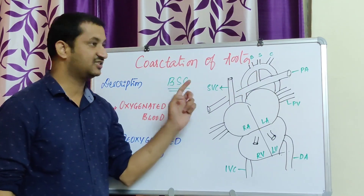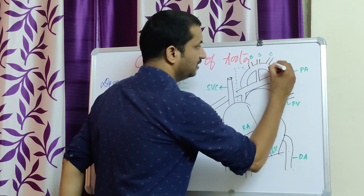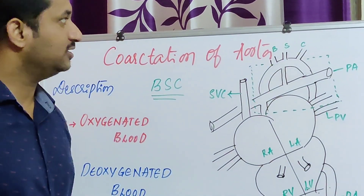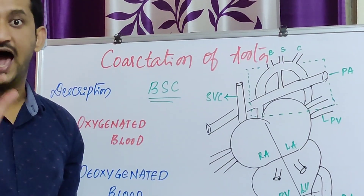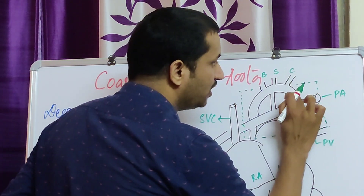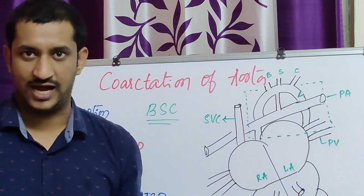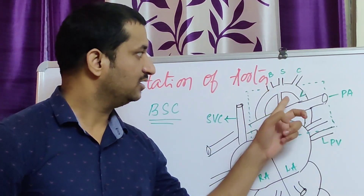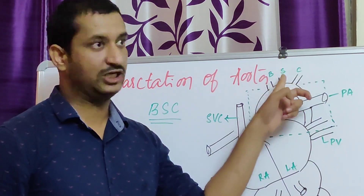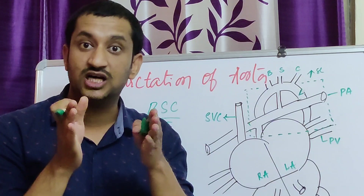B is brachiocephalic, S is subclavian, C is carotid artery. I have highlighted this particular part with green color. Coarctation of aorta — coarctation is nothing but narrowing, and aorta is the biggest artery. This is a localized narrowing just after the patent ductus arteriosus, where you will have increased pressure proximal to the defect.